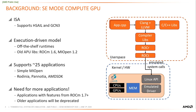To explain some reasoning for the full system mode support, some background of the current support might be needed. There is another talk in the GEM5 workshop this year that gives an overview of the existing SE mode support for compute GPU as well as background on the GPU model. To summarize, currently GEM5 supports running GPU applications in SE mode on ROCm 1.6. The model in the mainline GEM5 has been available for several years to run HSAIL, and the GCN3 model is provided in a separate repository under a feature branch.